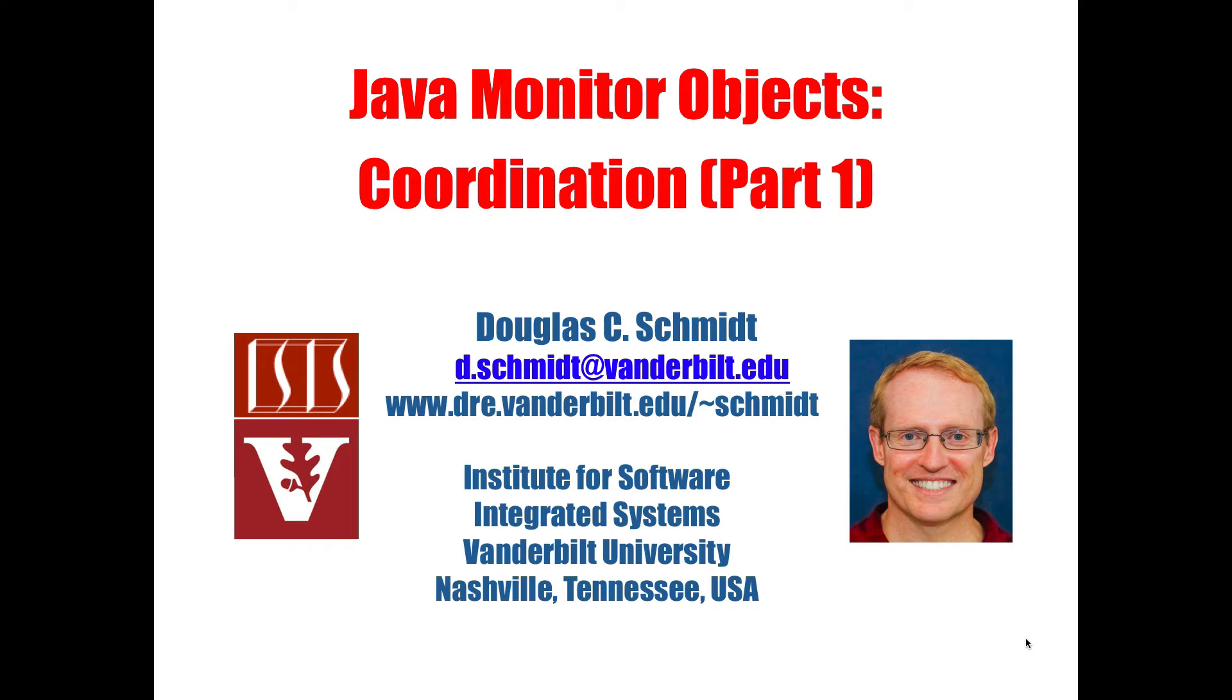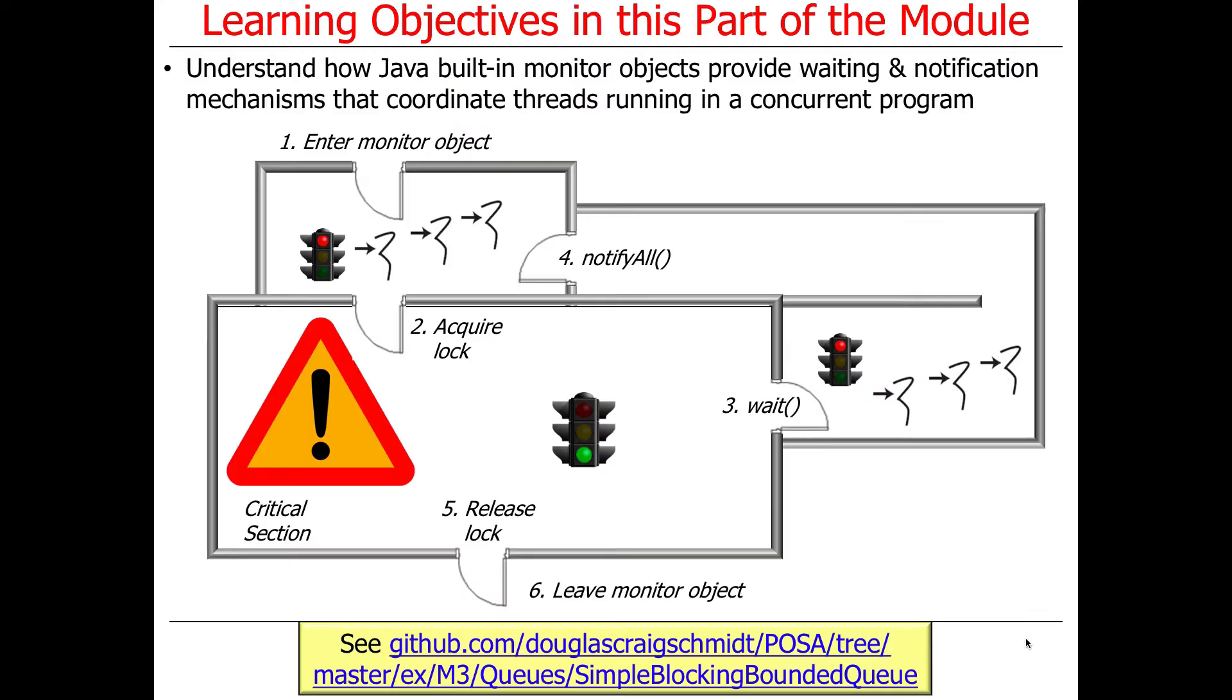Now that we've talked about synchronization and synchronized methods and statements, let's talk about the other capability provided by monitor objects, which is coordination. I'll talk about how monitor objects provide these wait and notification mechanisms that can be used to coordinate threads running in a concurrent program.